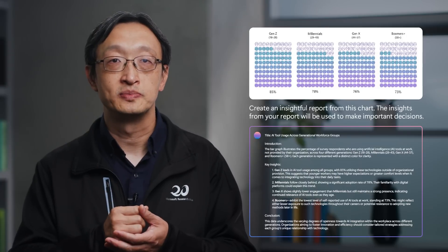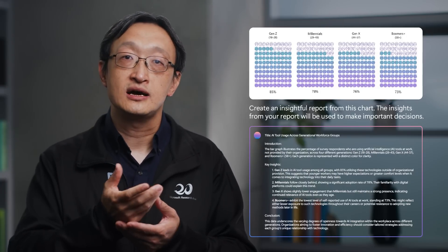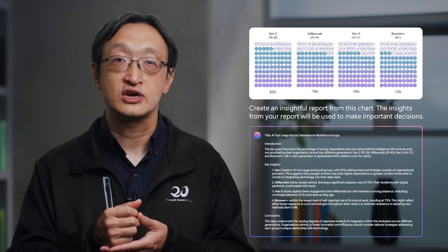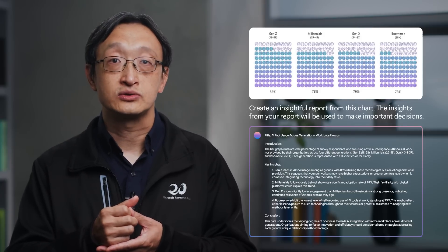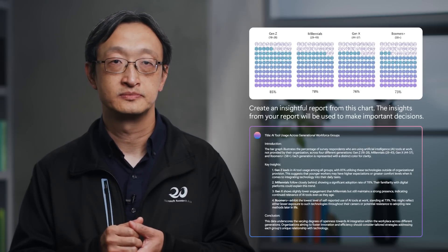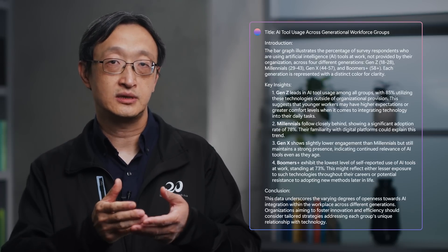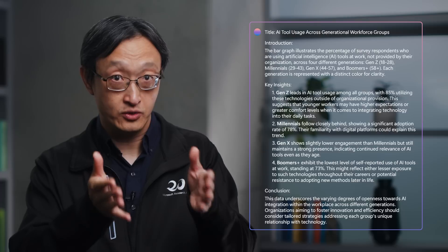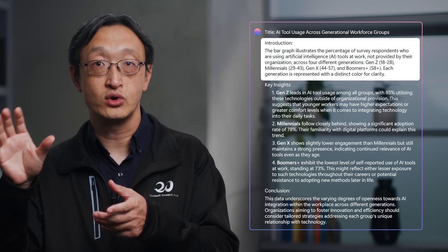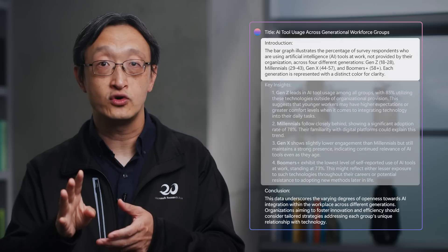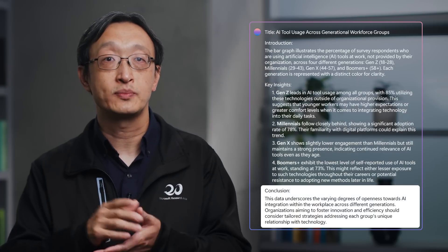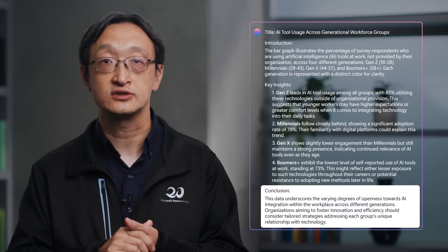Here is another example where the model is asked to generate an insightful report from a chart, and is told that the report will be used to make important decisions. The model-generated report is very well structured: it starts with an introduction to what the chart is about, then gives four insights based on the chart, and concludes with a suggestion to the decision makers.